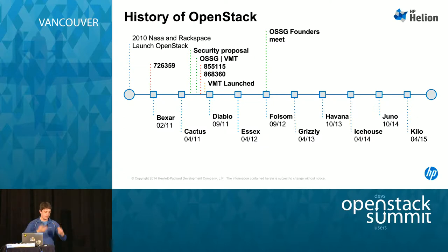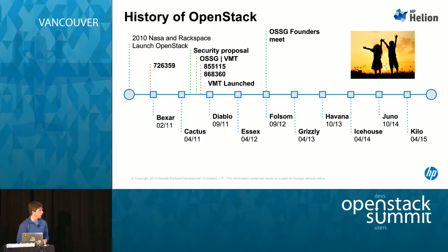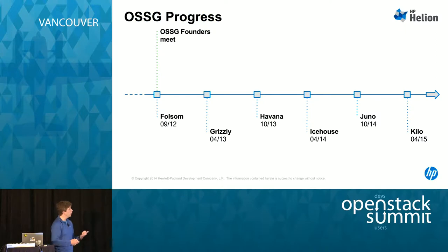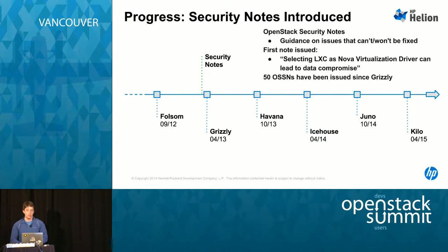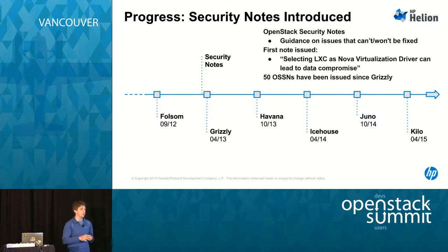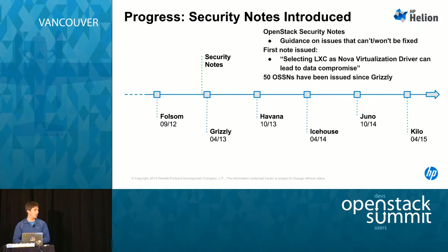VMT processes improved and things became more standardized, then the security group founders — myself and Brian — met in San Francisco. We started taking on a number of challenges. The very first thing we started to do was actually an idea that came out of the vulnerability management team themselves: to create security notes. The VMT were finding there were a lot of things being reported that didn't meet their requirements for a full vulnerability with an OpenStack advisory. The very first one we wrote was that selecting LXC as a Nova virtualization driver can lead to data compromise.